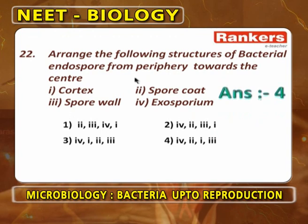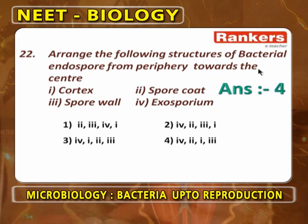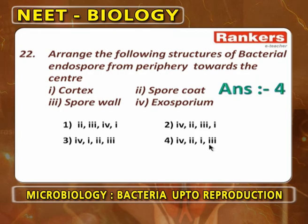Arrange the structures of a bacterial endospore from periphery to center — the fourth option: exosporium, spore coat, cortex, spore wall. The sequence with exosporium additionally included is 4, 2, 1, 3.